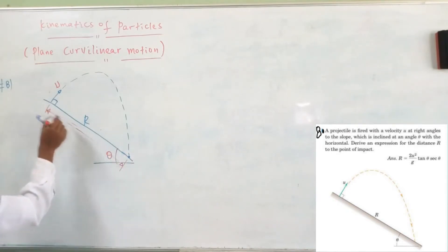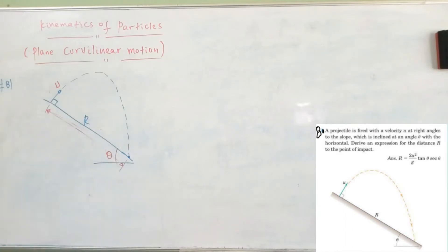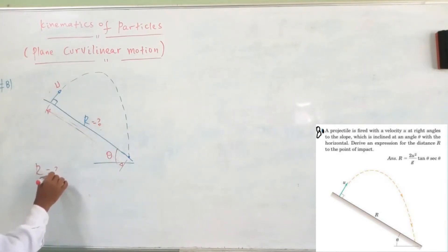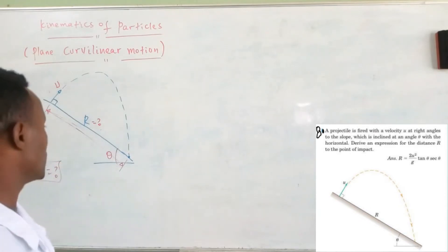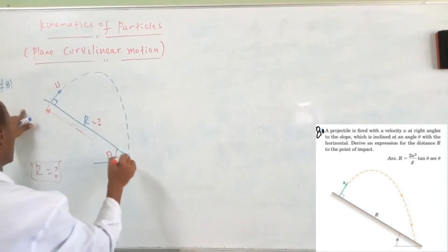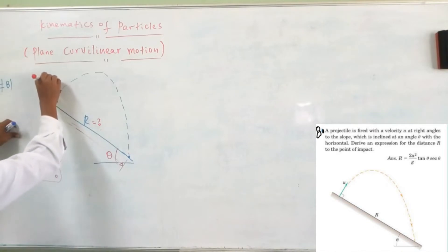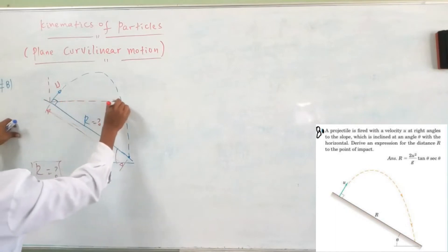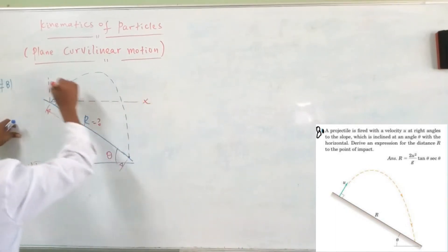The distance is R. The distance R is along the slope. We can express R. We can use the formula, for example. We can write R. We can write the equations and the reference axes.